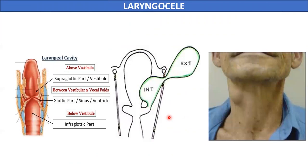Laryngoceles can also form in the saccule of the larynx. The saccule is the part of the laryngeal cavity that is an extension of the sinus of the larynx projecting outward. Laryngoceles can be internal or external. Internal laryngoceles lie within the thyroid membrane and may not cause a swelling in the neck, whereas external laryngoceles pierce the thyroid membrane and cause a visible swelling in the neck.